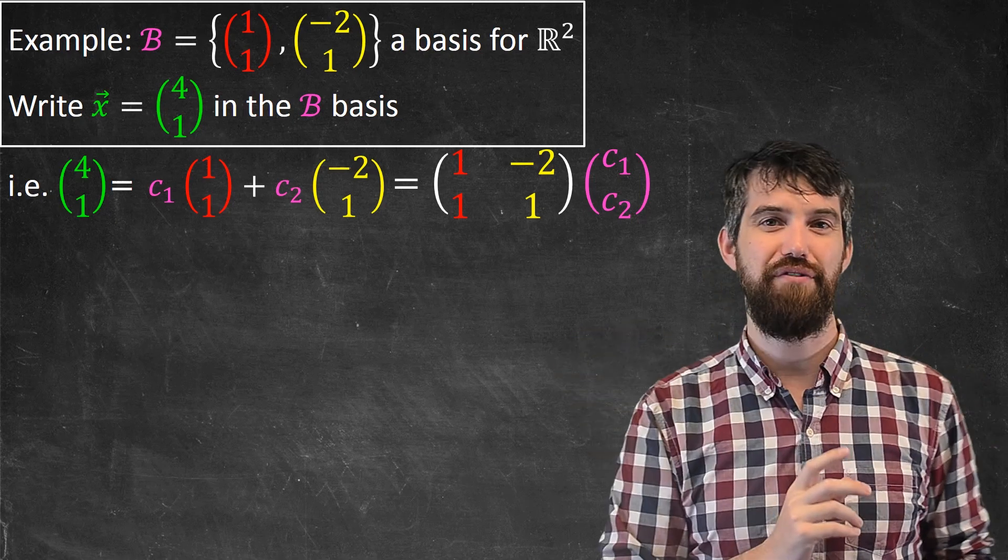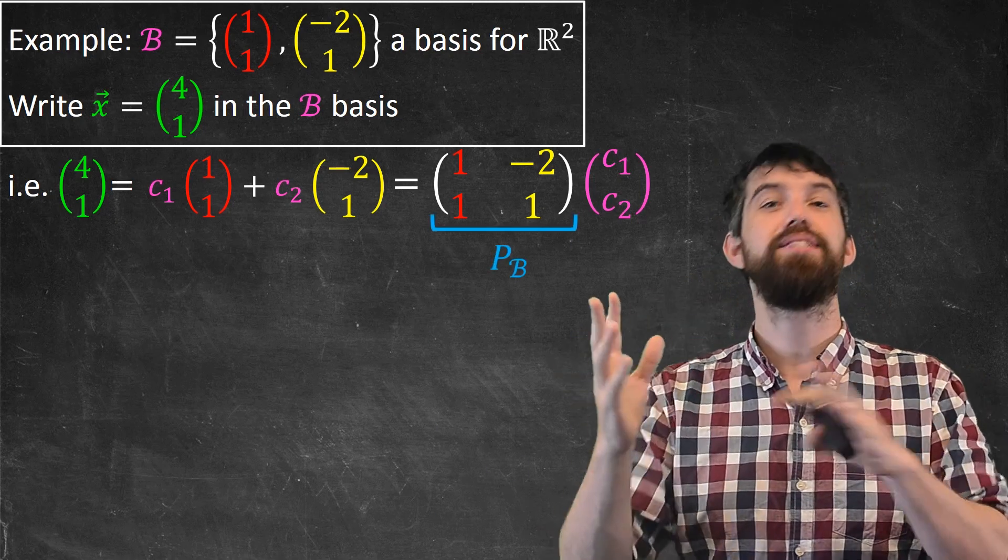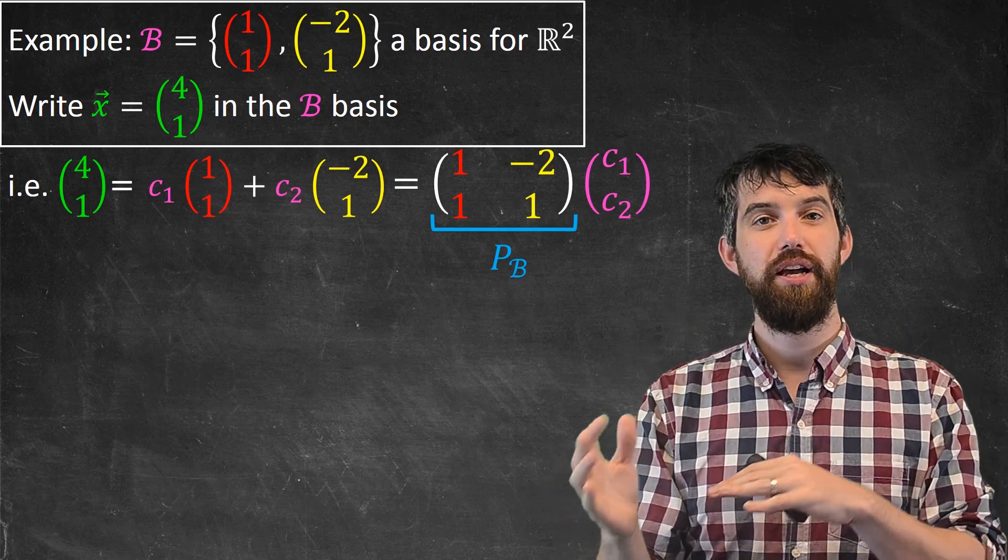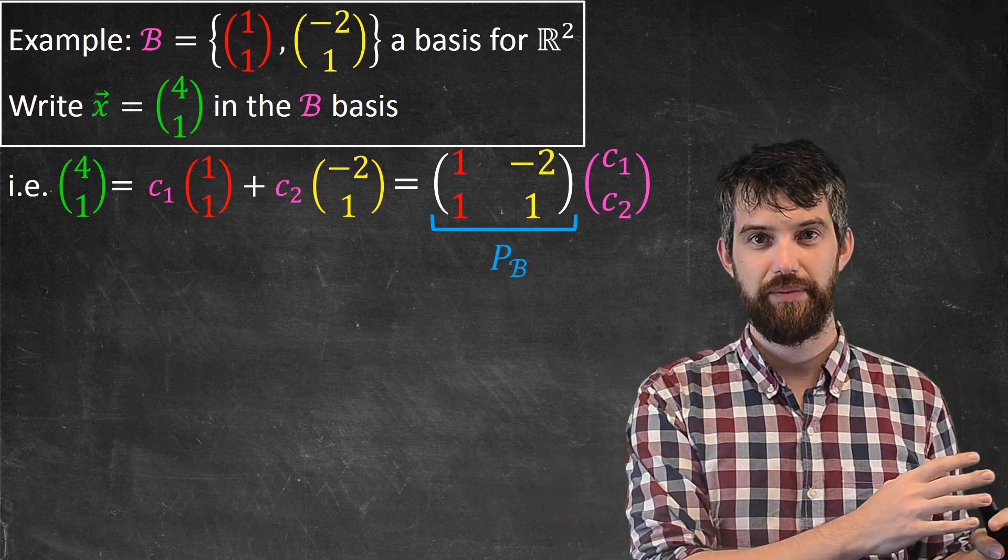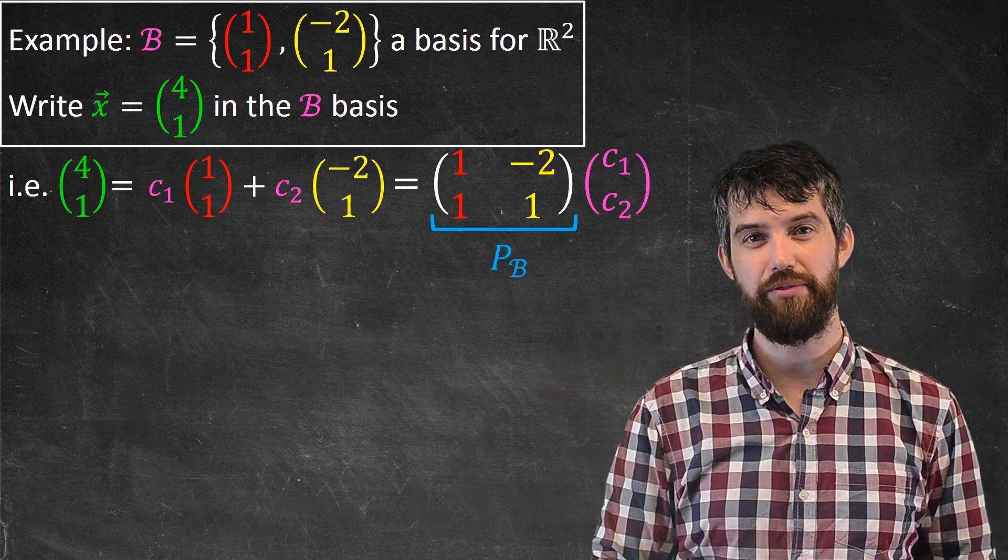So the matrix that I have here, I am given a name. This matrix is called P sub B. This is a matrix associated to every single basis, and you just take the vectors of the basis and put them in as the columns of the matrix.